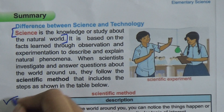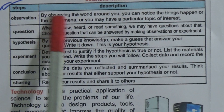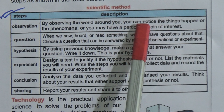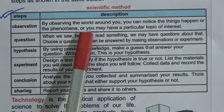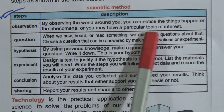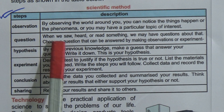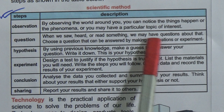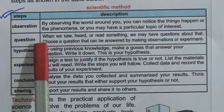The scientific method table you have to learn. The first step is observation — by observing the world around you, you can notice things that happen, the phenomena, or you may have a particular topic of interest. The next step is question — when we see, hear, or read something, we may have questions about that.